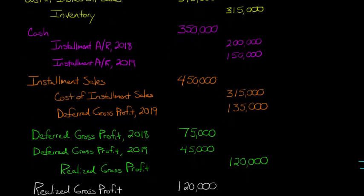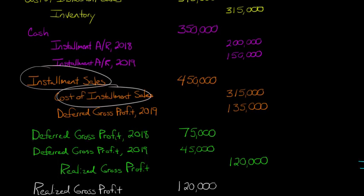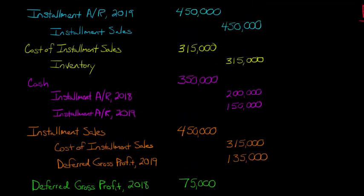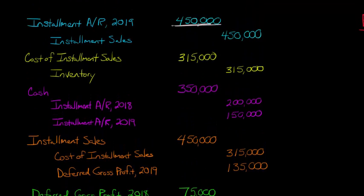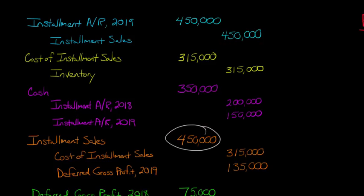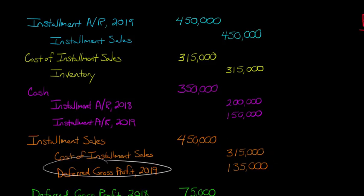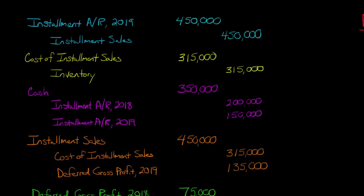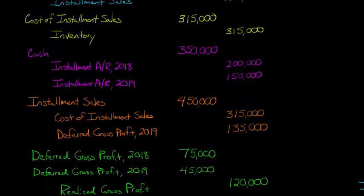Now for the closing entry to zero out installment sales and cost of installment sales: we debit installment sales for $450,000 and credit cost of sales for $315,000, giving us a deferred gross profit 2019 of $135,000. Note there are two separate deferred gross profit accounts — 2018 and 2019 — because we still haven't collected all the cash from prior period sales.